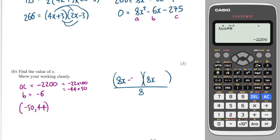I take my two numbers, which are minus 50 and plus 44, and then I divide through by 8. Now, neither of these brackets can be perfectly divided through by 8.